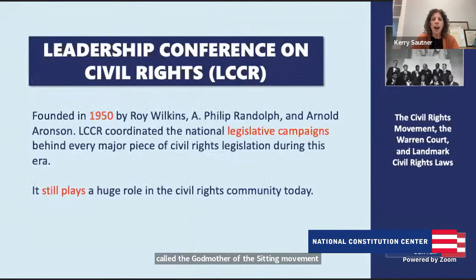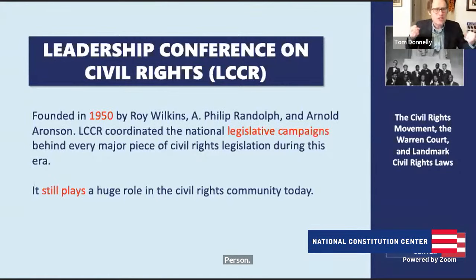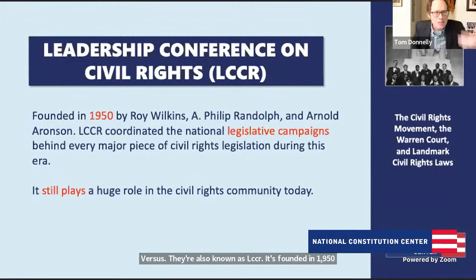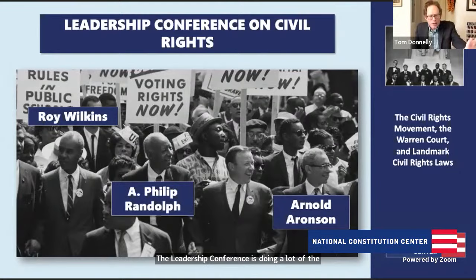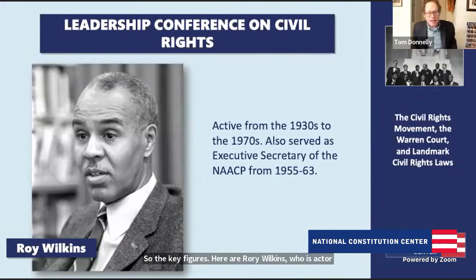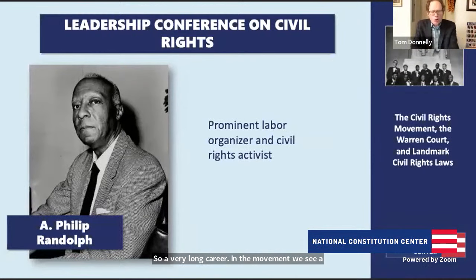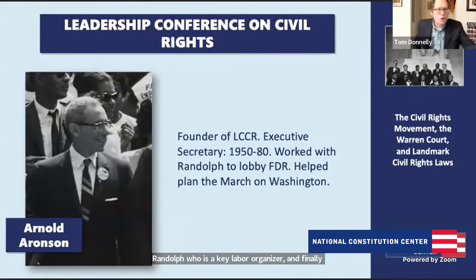Now we're looking at the Leadership Conference on Civil Rights, also known as LCCR, founded in 1950. Their big role in the movement was to organize big national legislative campaigns — think about big laws like the Civil Rights Act of 1964 and the Voting Rights Act of 1965. Key figures include Roy Wilkins, active from the 1930s all the way to the 1970s; A. Philip Randolph, a key labor organizer; and Arnold Harrison, executive director from 1950 to 1980, who helped lobby FDR to end racial discrimination and helped plan the March on Washington.